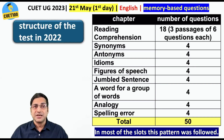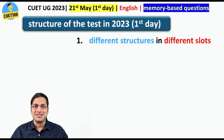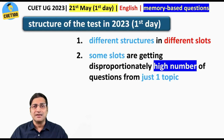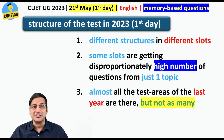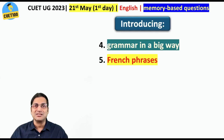This year also you have to attempt 40 out of 50 questions in 45 minutes — but the structure has changed a lot. First of all, different structures appear in different slots this year. Some slots are getting a disproportionately high number of questions from just one topic; like in one slot there were five to six questions from active and passive voice. Almost all the test areas from last year are still there, but not as many questions. Grammar has been introduced in a big way, and in most slots they have asked a couple of French phrases as well.